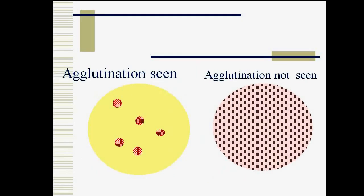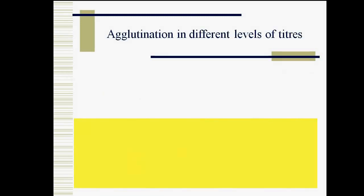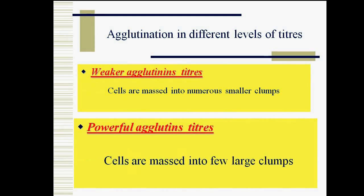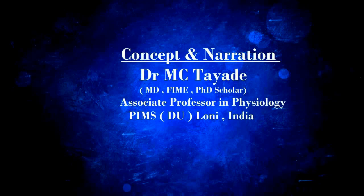This is a graphical presentation showing agglutination seen and agglutination not seen. In the first diagram, agglutination is observed — that means clot formation is observed — while agglutination is not seen in the second figure. When seeing agglutination at different levels of titer: with weaker agglutinin titers, cells are massed into numerous smaller clumps, while with powerful agglutinin titers, the cells are massed into few large clumps.